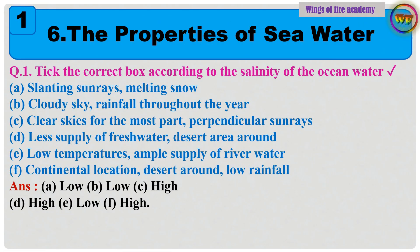Question 1: Tick the correct box according to the salinity of the ocean water. A. Slanting sunrays, melting snow. B. Cloudy sky, rainfall throughout the year. C. Clear skies for the most part, perpendicular sunrays. D. Less supply of freshwater, desert area around. E. Low temperatures, ample supply of river water. F. Continental location, desert around, low rainfall.